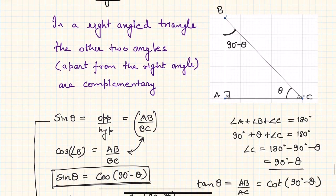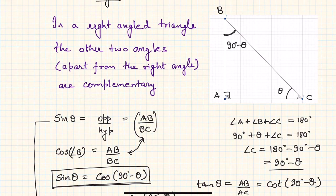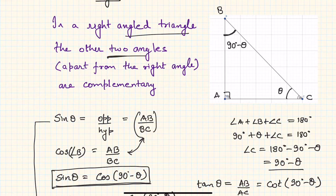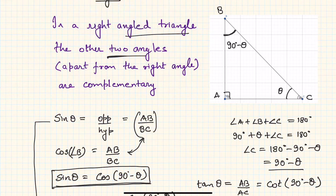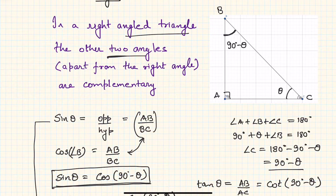In a right angle triangle, the two angles apart from the 90 degree angle are always complementary. If one angle is theta, by the angle sum property the other is 90 minus theta. So if angle C is 90 degrees and angle A is theta, then angle B equals 180 minus 90 minus theta, which gives 90 minus theta.